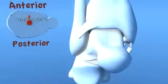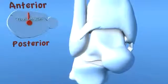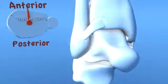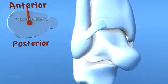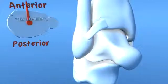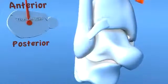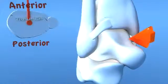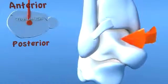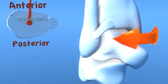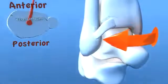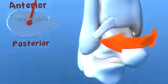With the foot in a fixed supinated position, the forces start along the lateral axis of the fibula. The leg undergoes an internal rotation creating tension on the anterior inferior tibial fibular ligament.